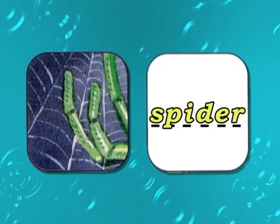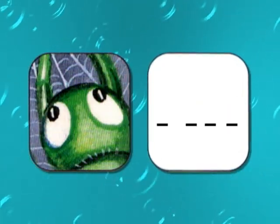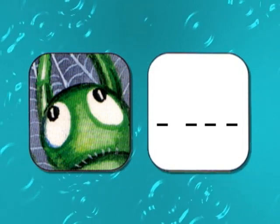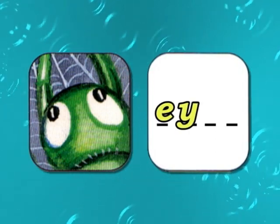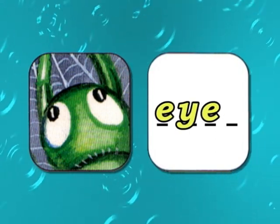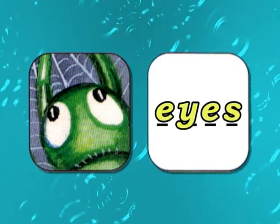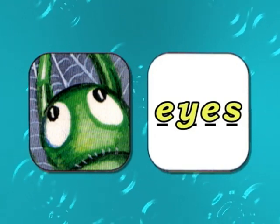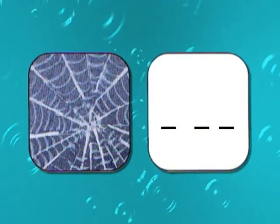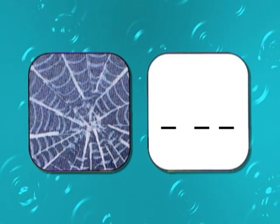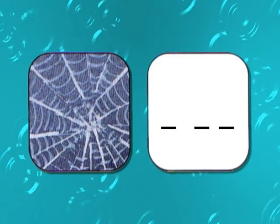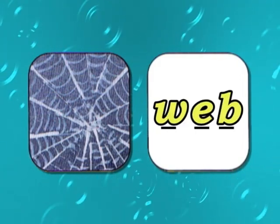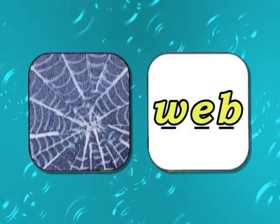Can you spell the word eyes? E-Y-E-S. Eyes. Good. And the word web. Can you spell the word web? W-E-B. Web. Very good.